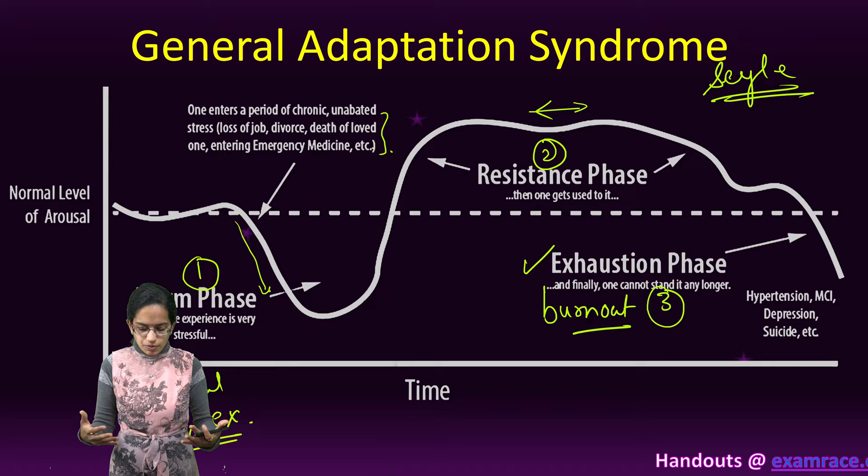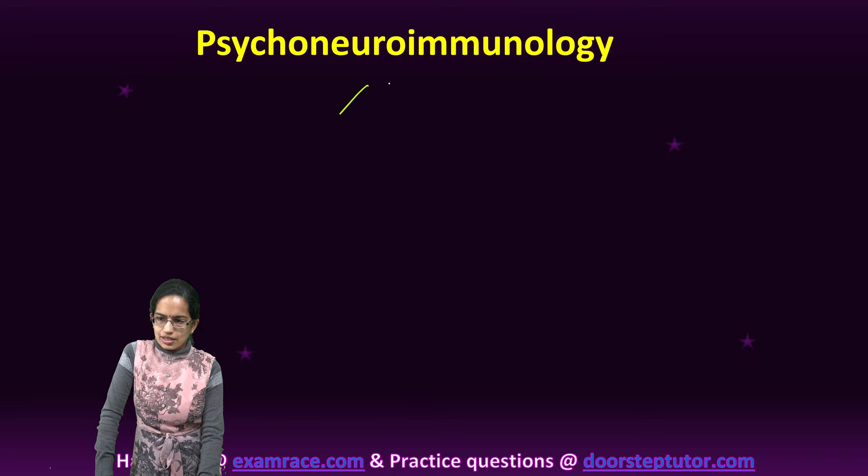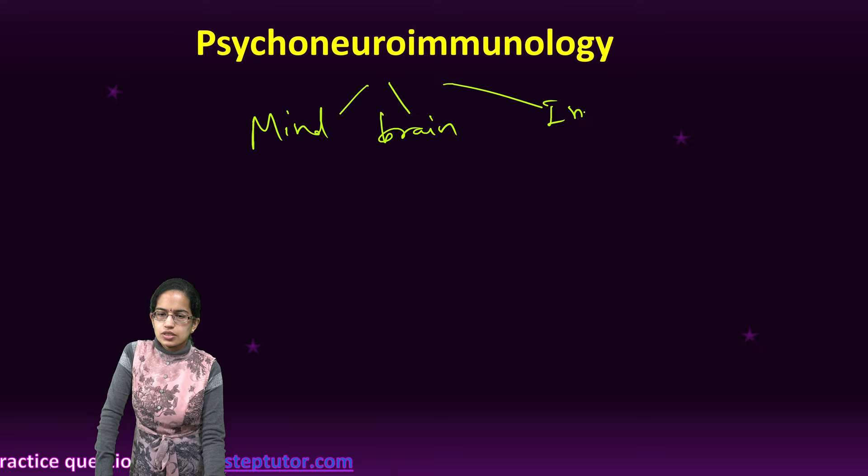The next is psychoneuroimmunology, which focuses on the link between three things: the mind, the brain, and the immune system. We focus on three important aspects — the mind, the brain as the physical entity, and the immune response system.